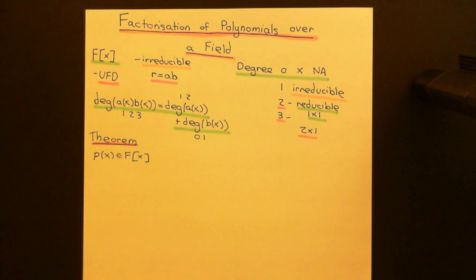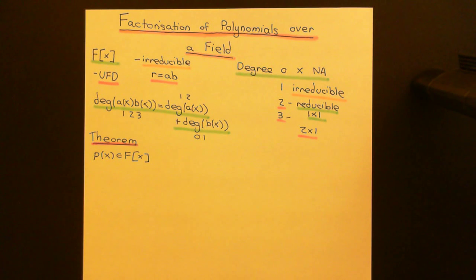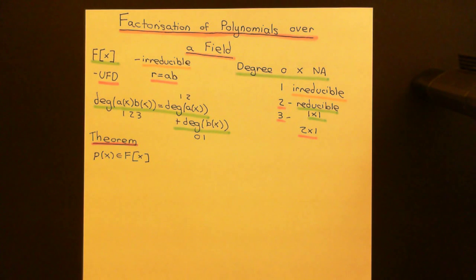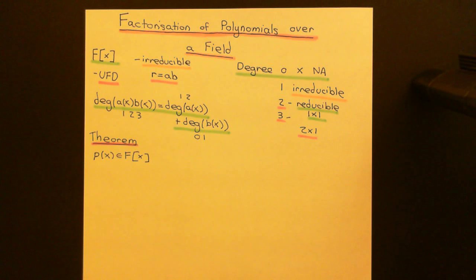Welcome back to this next video in which we are discussing factorization of polynomials over a field. We're currently in the process of trying to understand when a degree 2 or degree 3 polynomial is going to be reducible and when it's going to be irreducible. What we've agreed on so far is that a polynomial of degree 2 or 3 will be reducible if and only if it has a degree 1 polynomial as a divisor.